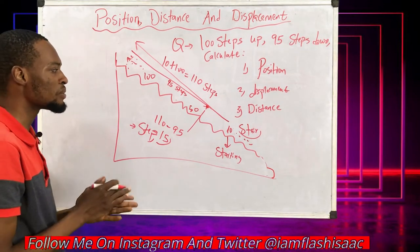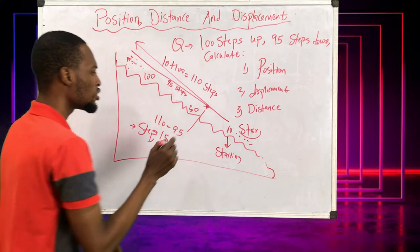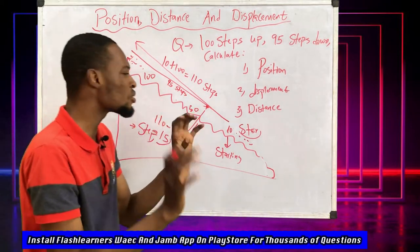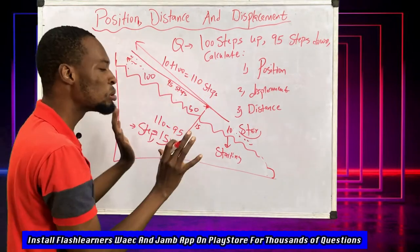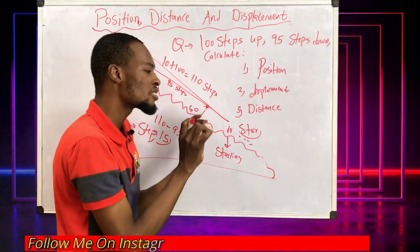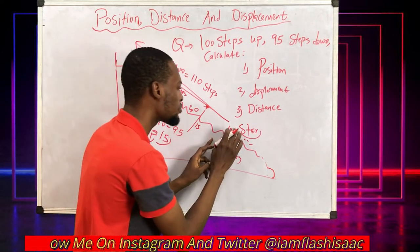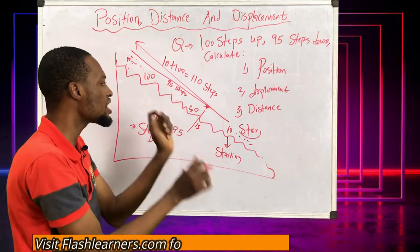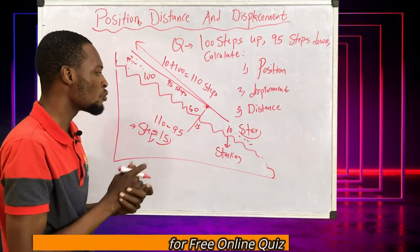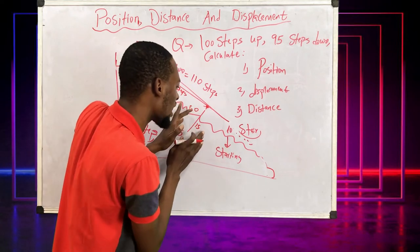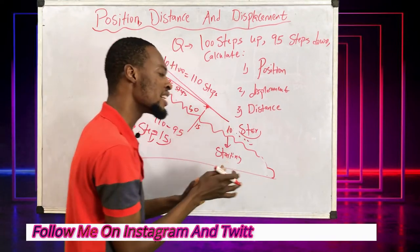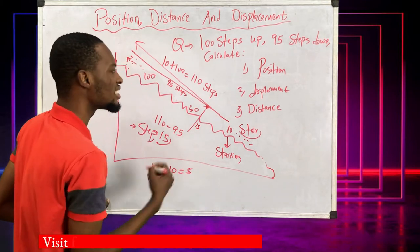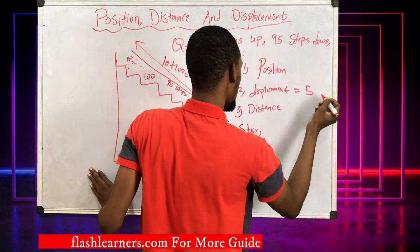Now what is the displacement? Displacement doesn't consider all the steps you took — it only considers the difference between your starting point and your end point. The change in position is your displacement: 15 minus 10 equals 5. So your displacement equals 5 steps.